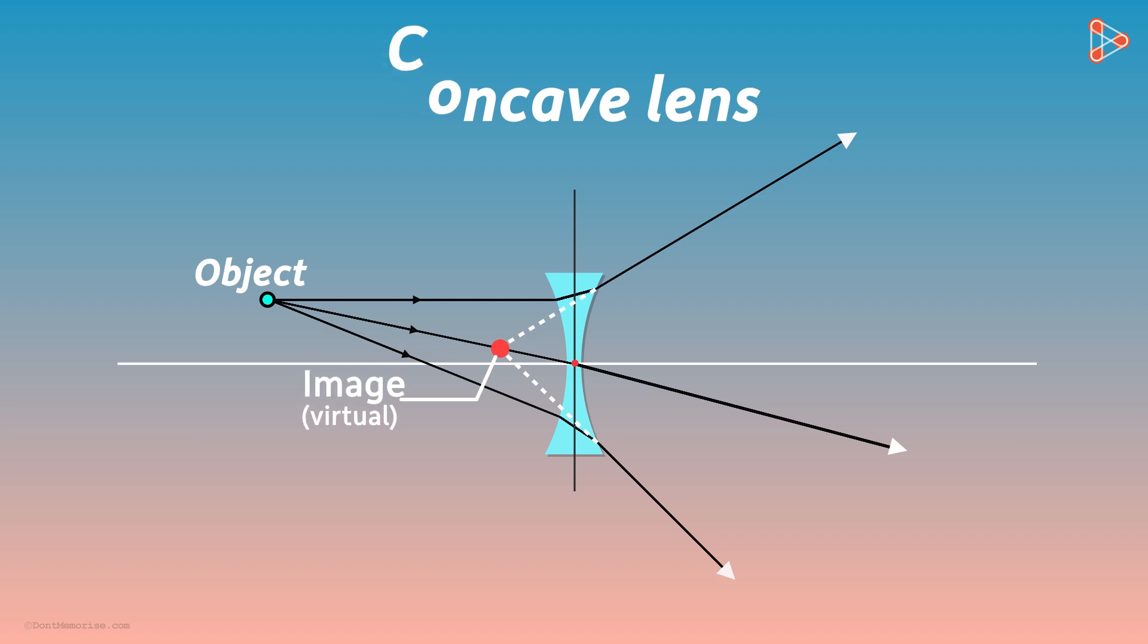So this is a pattern by which concave lens refracts rays of light. It diverges all the light coming from a point. Hence it's called a diverging lens.